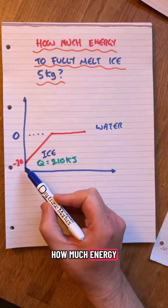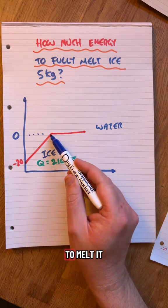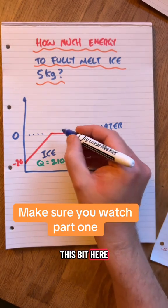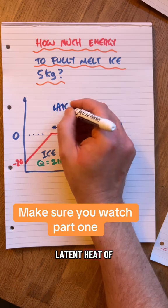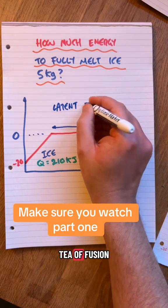In my last video we worked out how much energy to go from minus 20 up to zero just to start to melt it. This bit here is called the latent heat of fusion.